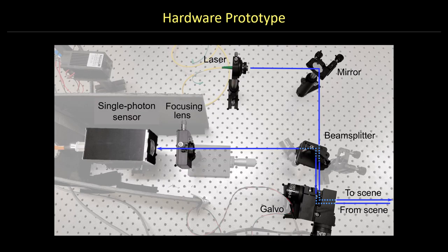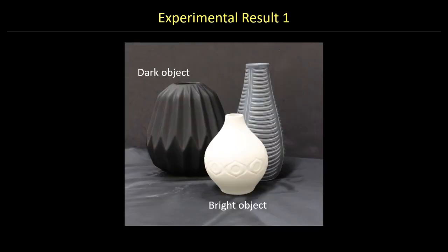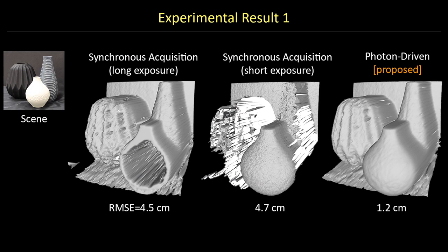We now show some experimental results. The first experiment shows a scene with large dynamic range of reflectivities. The bright vase has almost an order of magnitude higher reflectivity than the black vase. Photon-driven acquisition can automatically adapt to a wide range of reflectivities and recover an accurate depth map.